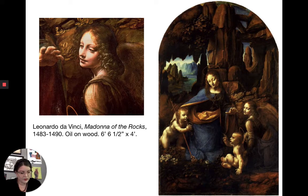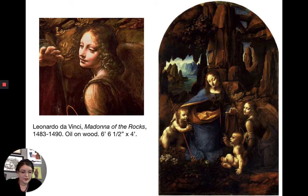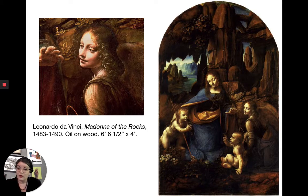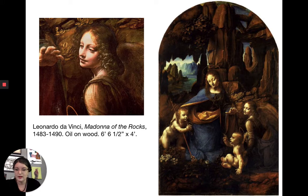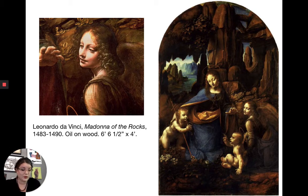The two breakthroughs in this painting are the unified triangular composition of the figures and the atmospheric setting, both made possible by oil paint. This is a very different use of oil from the northern European painters like Van der Weyden and Van Eyck, where everything even in the background is very sharp, focused, and encyclopedically detailed with deep rich colors. Leonardo's approach makes the figures' skin kind of glow within a misty atmosphere.